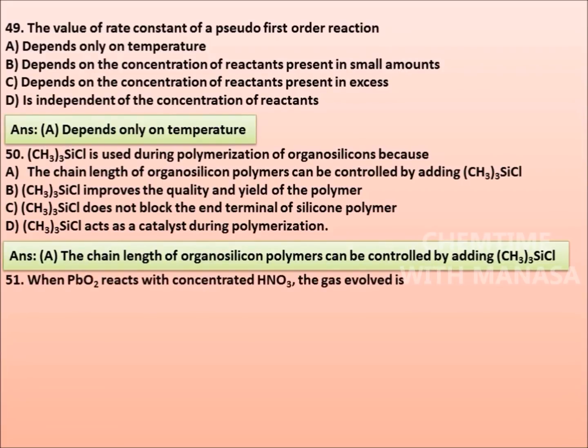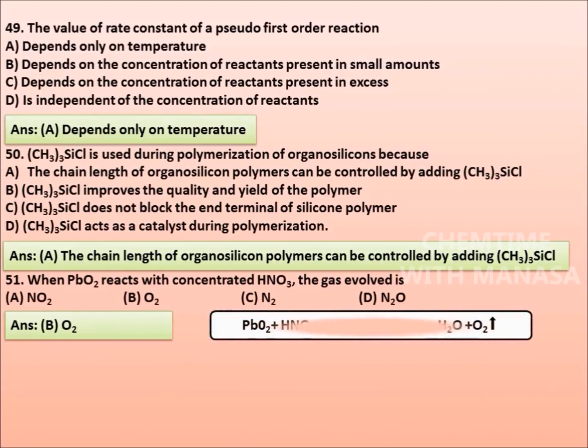Question number 51: When PbO2 reacts with concentrated nitric acid, the gas evolved is NO2, O2, N2, or N2O. Correct answer is option B, O2. And the reaction is: PbO2 plus HNO3 gives Pb(NO3)2 plus H2O plus O2.